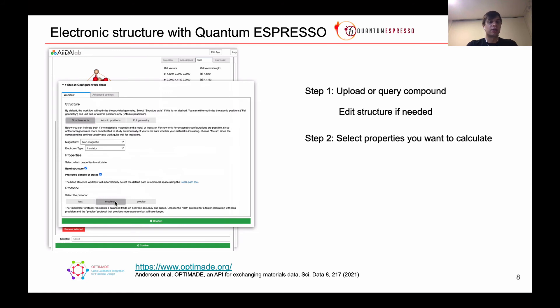We can also select the protocol, which essentially means the quality of simulation, which ranges from fast to precise. And obviously, fast protocol will be very quick but not precise, while precise protocol will be of very high quality but it will require significantly more computational resources.